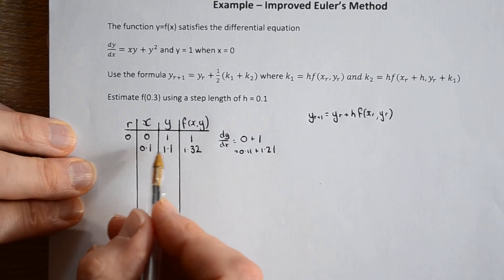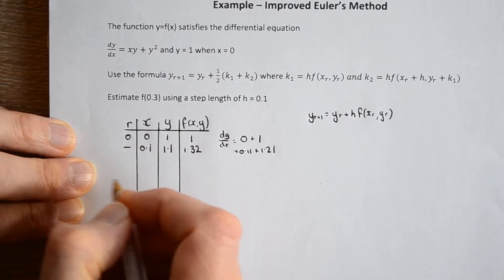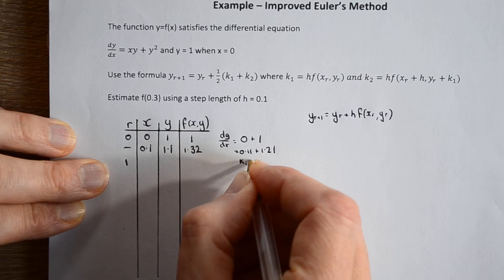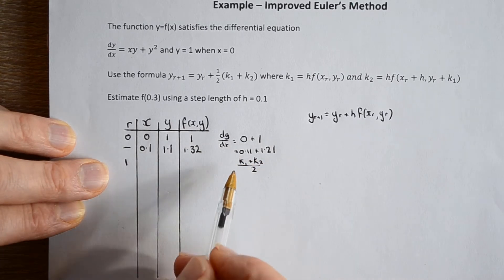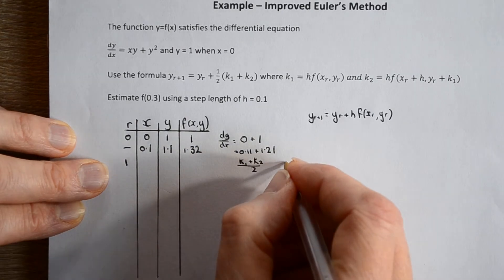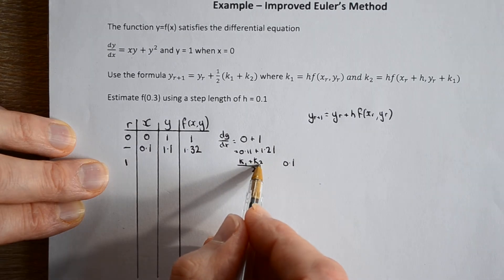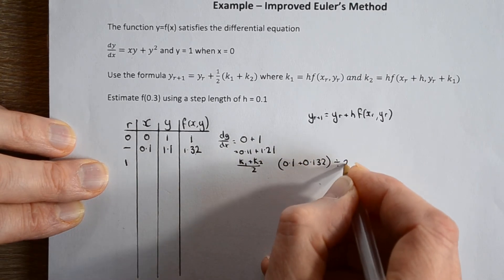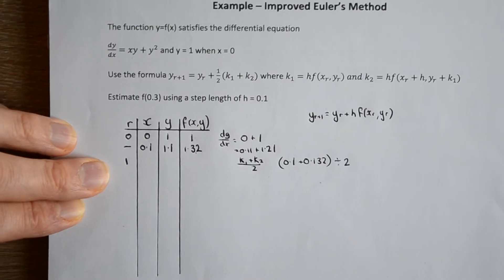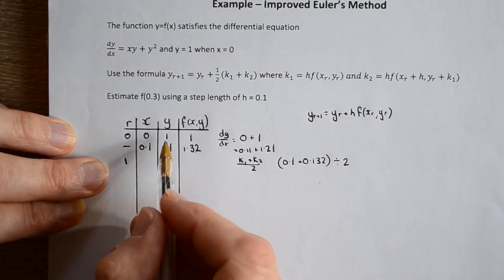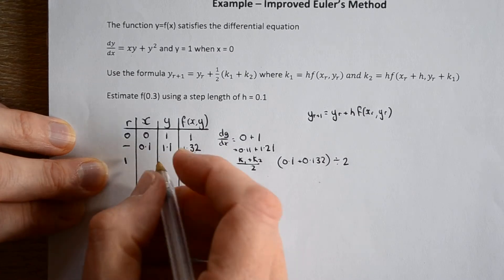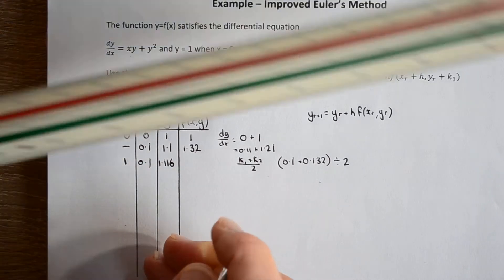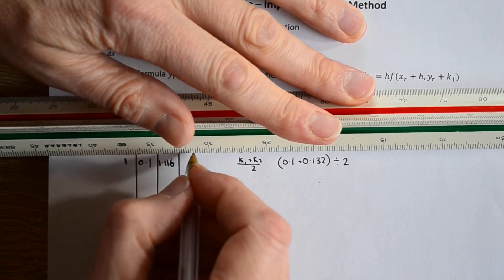This isn't our new x and y value — this is our false y value. So our next step is to find k1 plus k2 over 2: k1 is the step length times the gradient, so that's 0.1, and k2 is the step length times the second gradient. Dividing by 2 and adding on our initial y value gives us 1.116, and the x value is 0.1. There we've got our x and y value after the first true step.